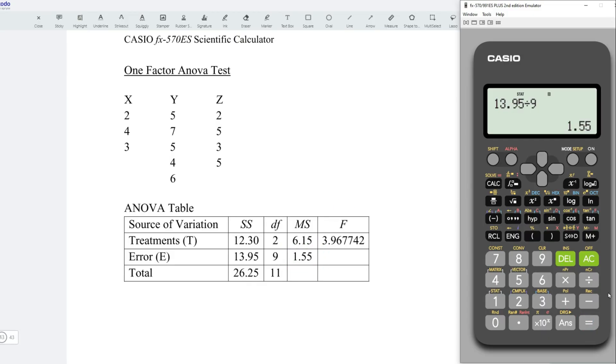To obtain the test statistic, take the mean square treatment, 6.15 divided by the mean square error, that is 1.55. Press on equal, and we obtain the test statistic.